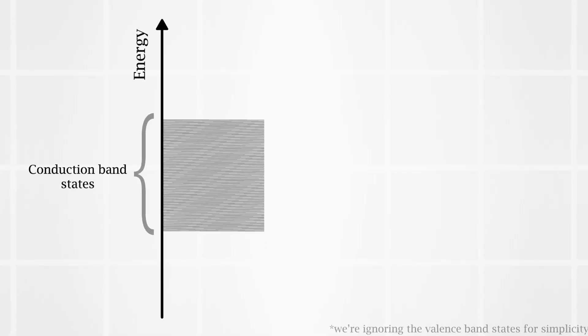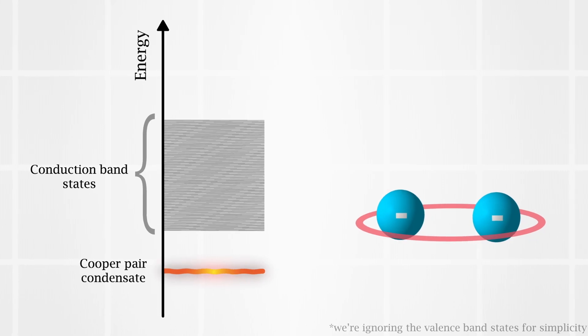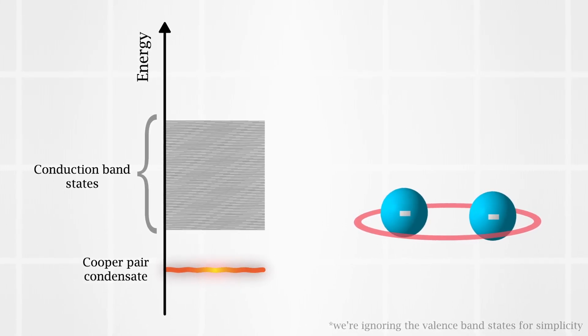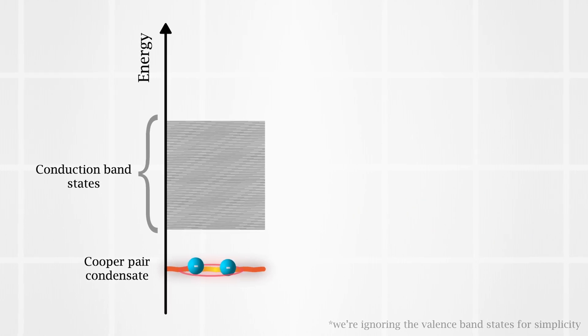So what we find is that now a new lowest energy state appears, below all the other energy states. And it is this new quantum state that all the pairs fall into. So this explains why it is now impossible for the electrons to scatter. They are already in the lowest energy state. There is no lower energy state for them to transition to.